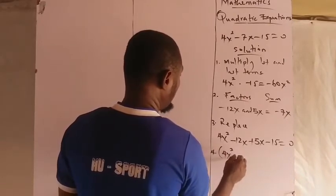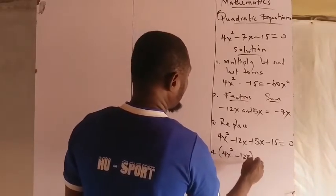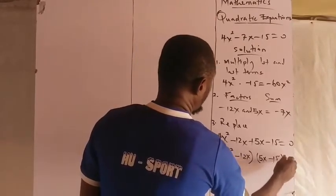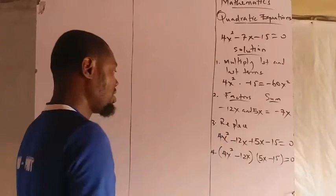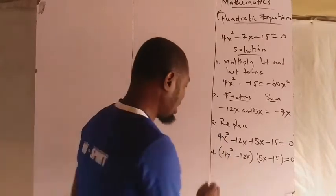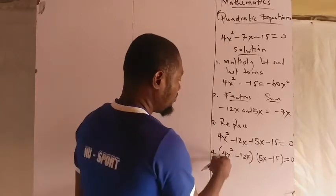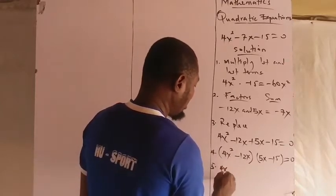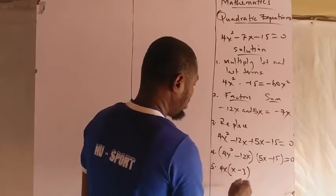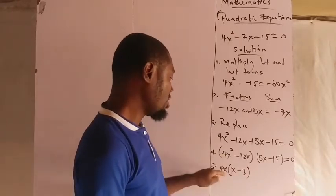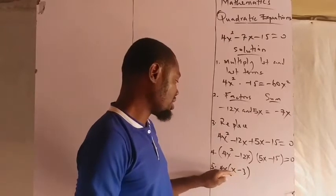What is common in the first bracket? 4x is common. Take 4x out, open the bracket: x - 3. 4 into 4 is gone, x into x² you're left with 1x, and 4 into 12 is 3.